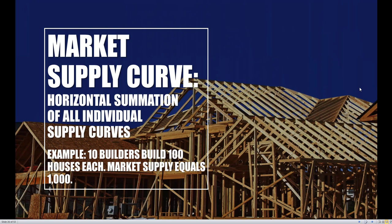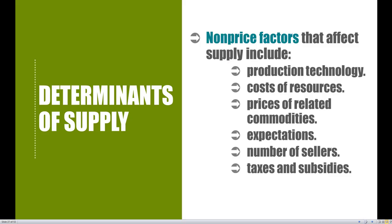A lot of the same things we talked about on the demand side still hold true on the supply side. But where things are going to be a little bit different is when we look at the determinants of supply — the things that will shift our supply curve to the right away from the origin, or to the left towards the origin. We'll go ahead and tackle all of these shifts in the next lecture.